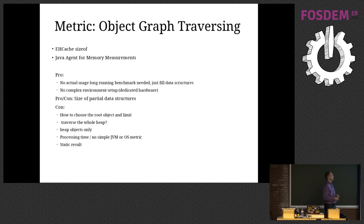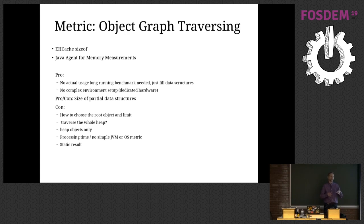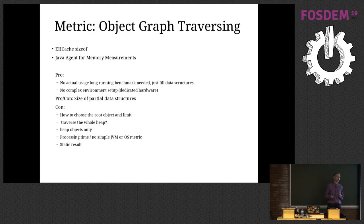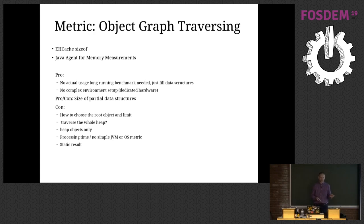What are the different opportunities to get memory information? One thing people are doing is object graph traversing. There are some libraries from EHCache — something called Java Agent for memory measurements. What happens is you give those libraries a root object and then they traverse, like a depth scan, into the object hierarchy via references, with some Unsafe magic to get the size of an object. This is summed up and you have a result. This is quite nice because you can just fill your data structures and then ask the library how much memory it's going to cost.